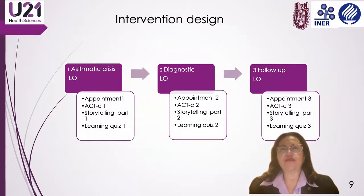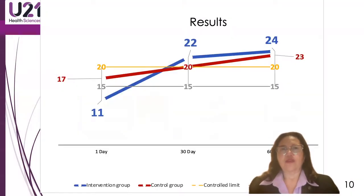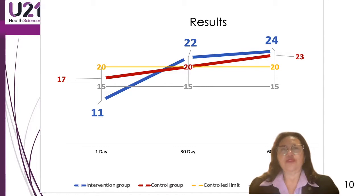We then planned to test the TPA e-learning course intervention design results. On day one, the intervention group had an ACT value of 11 points average — uncontrolled — and after 30 days of the TPA course, this average increased to 22 ACT points average, which corresponded to controlled asthma. You can see the blue line. By contrast, the control group in the red line started with 17 ACT points average, and after 13 days increased to 20 ACT points average — only three points more without the intervention.